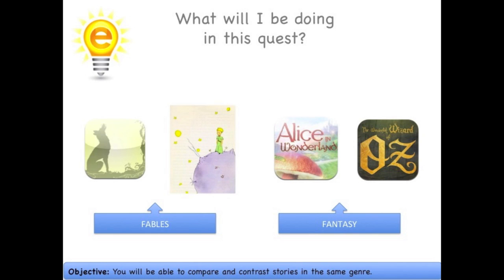You will be reading two different genres in this quest. Aesop's Fables and The Little Prince are both fables, and you'll also be reading two fantasy stories, Alice in Wonderland and The Wizard of Oz.